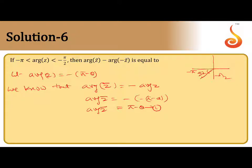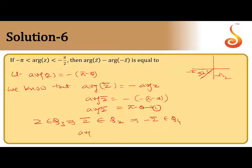Since z belongs to Q3, z̄ belongs to Q2. We have arg(z̄) = π - θ. Now, -z̄ belongs to Q4, so arg(-z̄) = -θ.